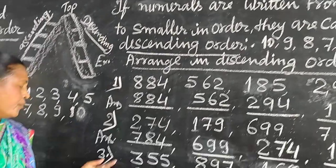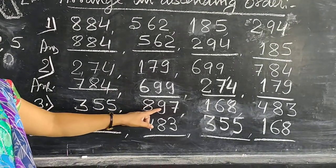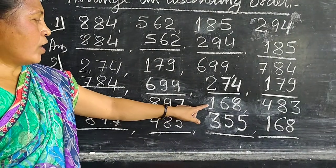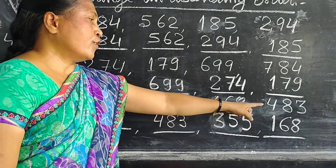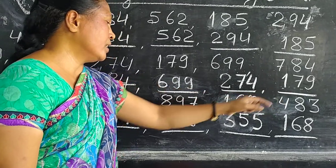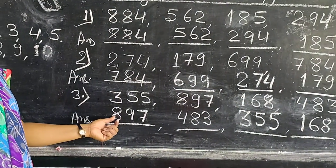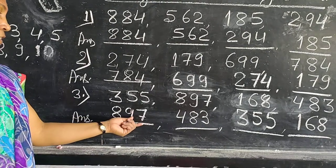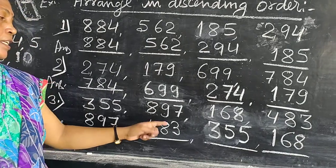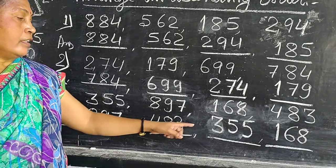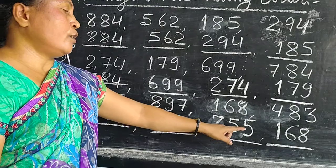Number 3: 355, 897, 168 and 483. The biggest number is 897, then after 483, then after 355.